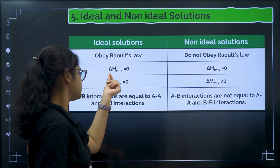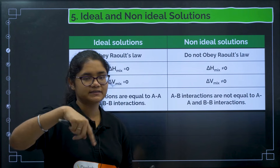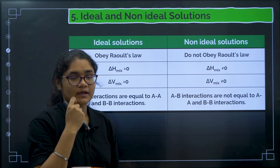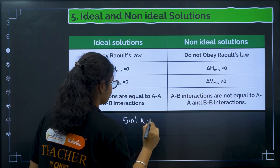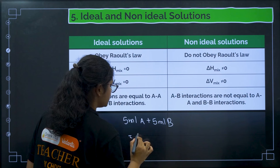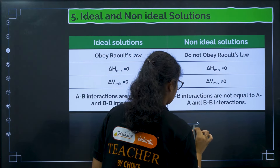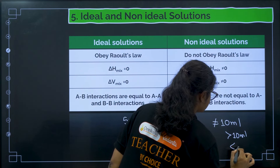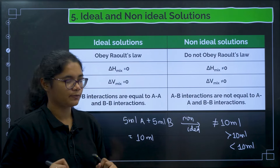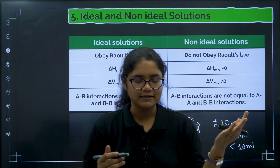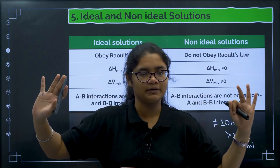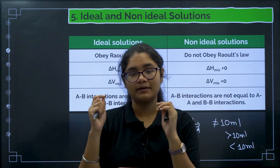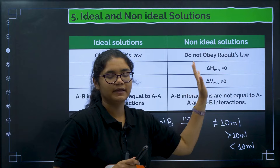The differences between ideal and non-ideal solutions: ideal solutions obey Raoult's law, ΔH_mix = 0, and ΔV_mix = 0 (mixing 5 mL A + 5 mL B gives exactly 10 mL). Non-ideal solutions do not obey Raoult's law, ΔH_mix ≠ 0, and ΔV_mix ≠ 0 (final volume can be greater or less than 10 mL). Regarding interactions: if AB interactions ≈ AA and BB interactions, the solution is ideal; if not, it is non-ideal.